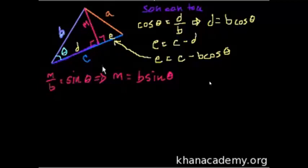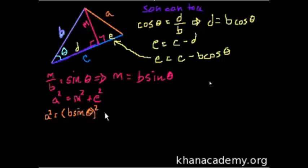So we figured out M, we figured out E, and now we want to figure out A. And this should jump out at you. We have two sides of a right triangle. We want to figure out the hypotenuse. We can use the Pythagorean theorem. The Pythagorean theorem tells us A squared is equal to M squared plus E squared. Right? Just the square of the other two sides. Well what's M squared plus E squared?